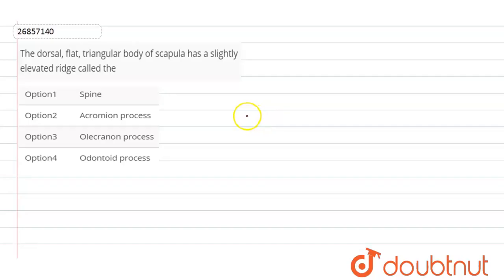Our question is: the dorsal flat triangular body of the scapula has a slightly elevated ridge called the - Option 1: spine, Option 2: acromion process, Option 3: olecranon process, Option 4: odontoid process.